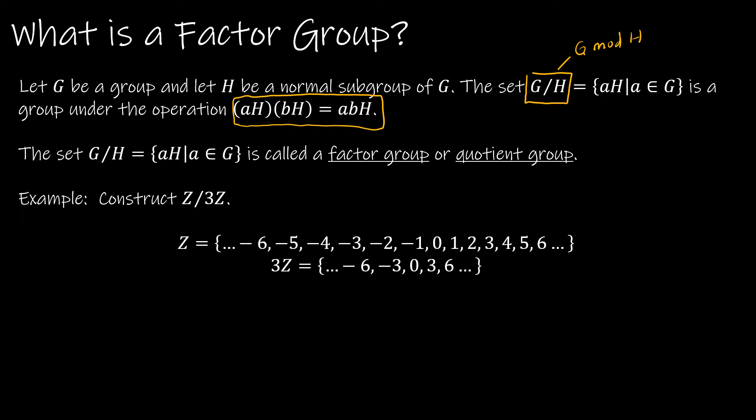The set of all cosets — the set of all AH for all A in G — is either called a factor group or a quotient group. Our textbook calls it a factor group, but you might also see it called a quotient group elsewhere.